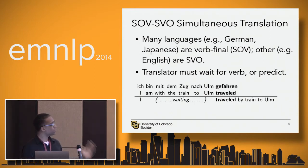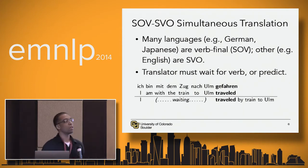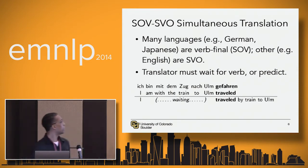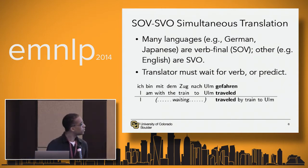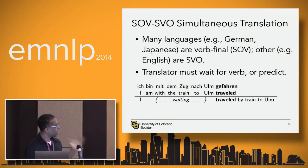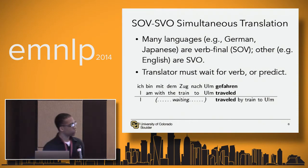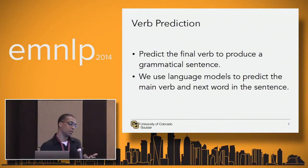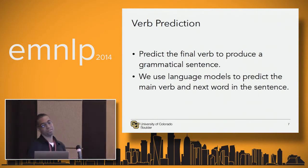We want to do this for these sorts of languages, which presents a unique problem, because verbs are extremely important — you generally can't have a complete sentence without a verb. In this German example, the last verb is 'gefahren', meaning 'traveled'. If we were to wait for that, we would just be doing normal translation after the sentence is complete. So our approach is to instead try to predict the verb, so we'll have a more grammatical fragment on the way to the end of the sentence.